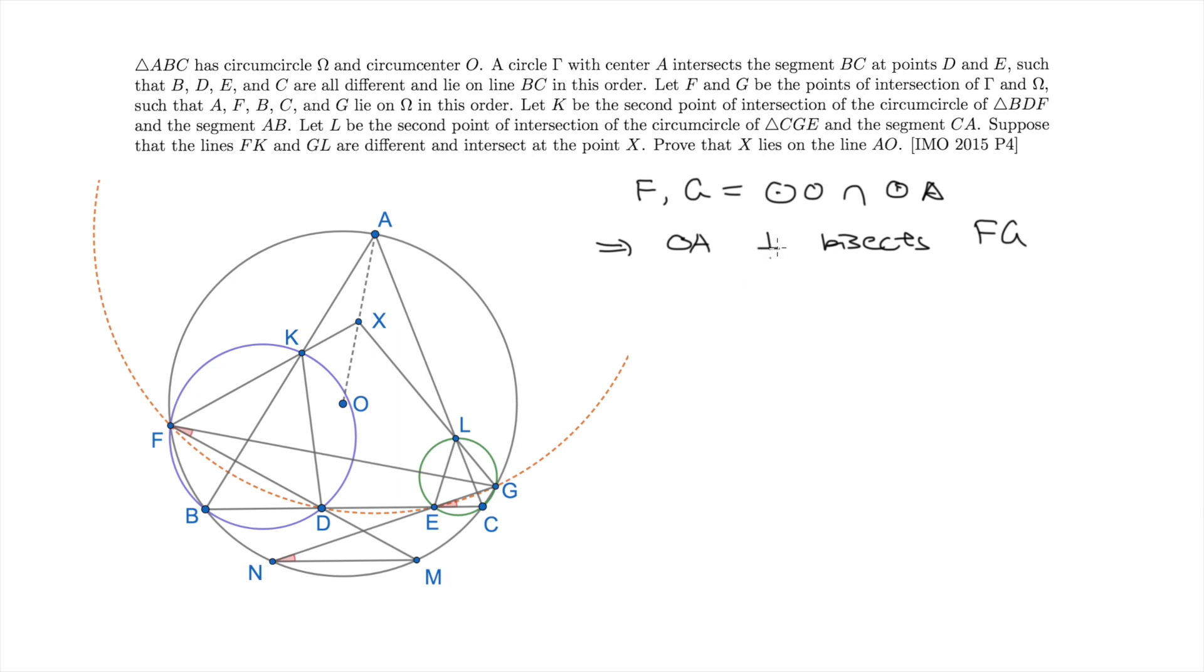So first, let me translate the statement into some angle relations. Since F and G are the intersection of the two circles with center O and center A, we have that OA is the perpendicular bisector of FG. So to prove that X lies on AO, we just need to prove that XF equals to XG, or equivalently the angle XGF equals to the angle GFX.